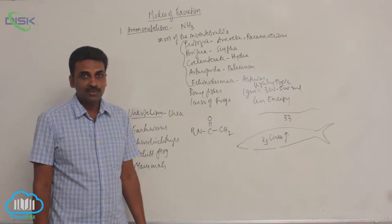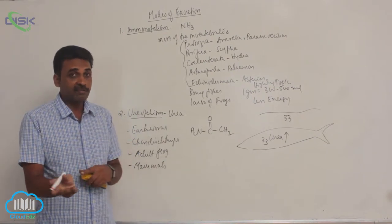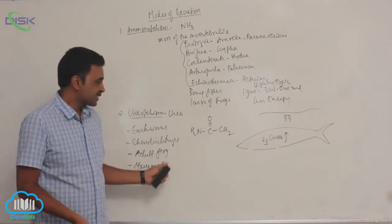Tadpole larvae excrete ammonia, but adult amphibians excrete urea. Mammals, including human beings, also excrete urea.